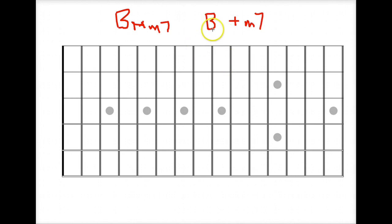So we have B, D sharp, F sharp here, and then we're going to add the minor 7th above the root, which is going to be an A.